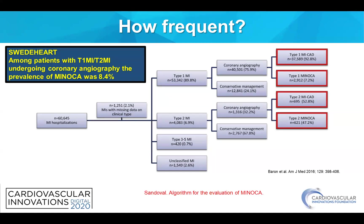This is from the SWEDEHEART registry, in which they identified that MINOCA occurred in 8.4% of patients. When categorized according to the universal definition of MI, the vast majority of MINOCA cases were type 1 MINOCA, which comprised 2,912 cases, compared to 621 patients with type 2 myocardial infarction. This illustrates how MINOCA is not one particular disease process but rather a heterogeneous entity entailing both type 1 and type 2 myocardial infarction mechanisms.